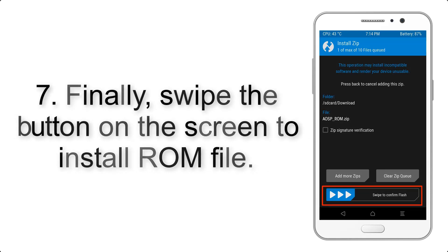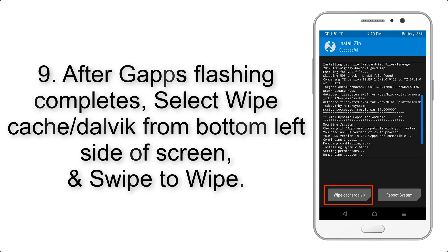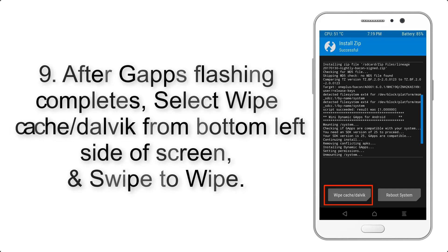Step 7: Swipe the button on the screen to install the ROM file. Step 9: After GApps flashing completes, select Wipe Cache and Dalvik from the bottom left side of the screen and swipe to wipe.